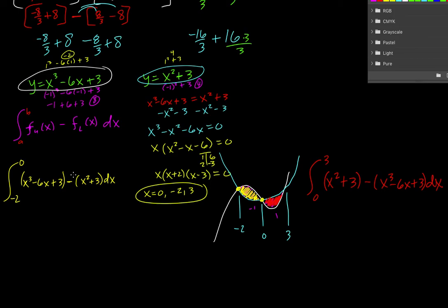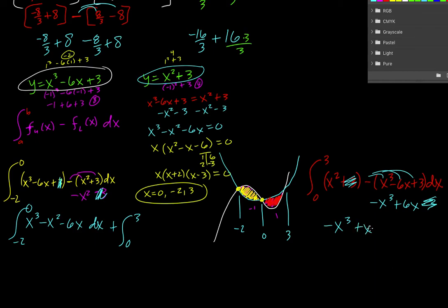Now we just need to combine these. So I'm going to distribute negative. So it's negative x squared minus 3. And when I combine it with all these pieces, this 3 and this negative 3 cancel. And then I have x cubed minus x squared minus 6x dx from negative 2 to 0. And then when I do this one, I'm going to add it over here, 0 to 3. And so I distribute this. And I get negative x cubed plus 6x minus 3. Once again this 3 and this negative 3 cancel. And we're left with negative x cubed plus x squared plus 6x.